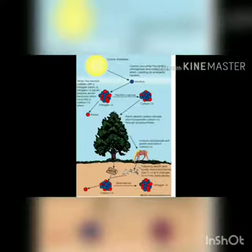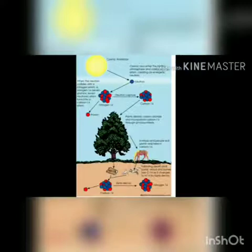What methods do they use and how do these methods work? In this chapter, we will examine the methods by which scientists use radioactivity to determine the age of objects, most notably carbon-14 dating.